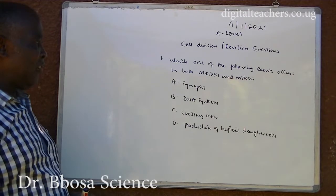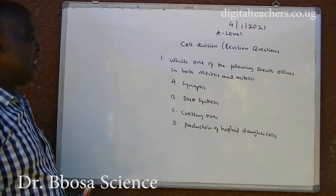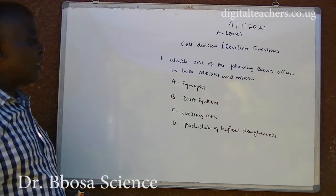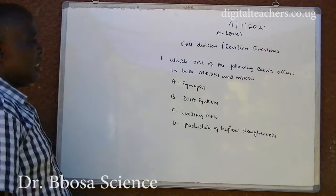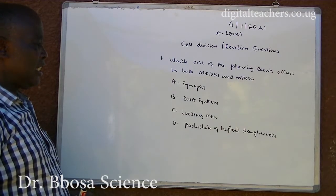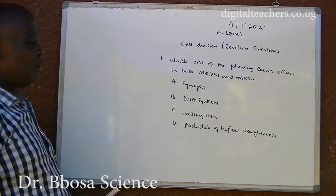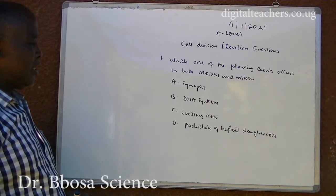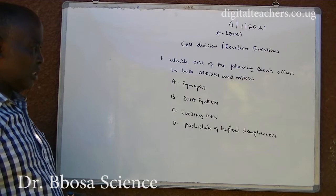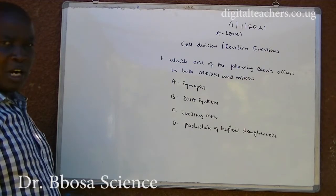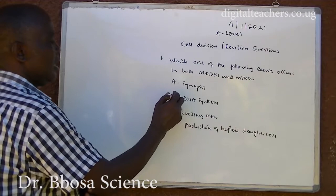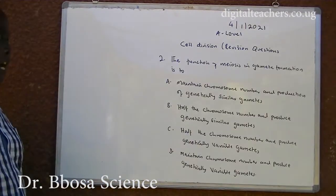Number 1. Which of the following events occurs in both meiosis and mitosis? A. Synapsis. B. DNA synthesis. C. Crossing over. D. Production of haploid daughter cells. You can pause and answer. The answer is B.